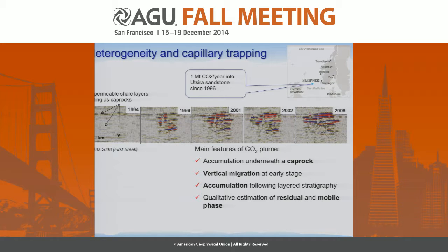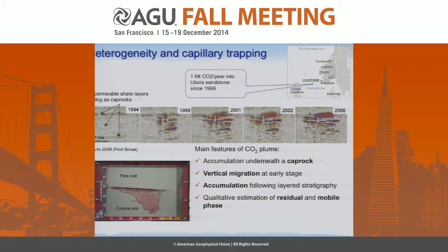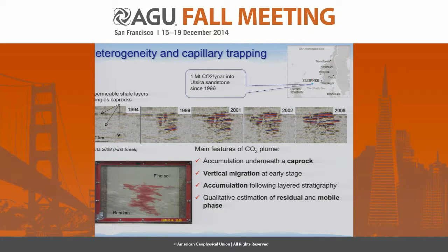I'm going to take this example from the Utsira formation at Sleipner. Some of you are familiar with this particular site. You can see that when you look at the final distribution using geophysical techniques, there's accumulation beneath the cap rock — you see these layers — and then vertical migration in the early stages before it started accumulating. We have done some experiments in the past applied to non-aqueous phase liquids, and this is a similar experiment where we are injecting fluid in a formation with a cap rock, comparing completely homogeneous and random field systems with capillary barrier effects.